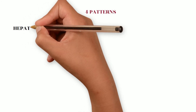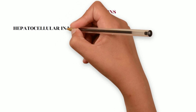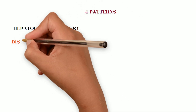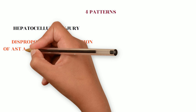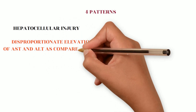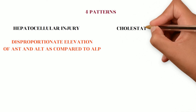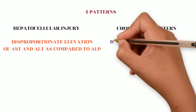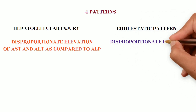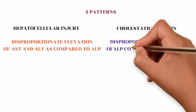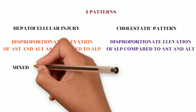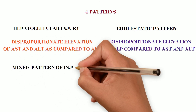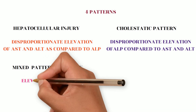Abnormal liver tests can fit into one of four patterns. The first is the hepatocellular pattern, where there is disproportionate elevation of AST and ALT compared to ALP. The second is the cholestatic pattern, where there is disproportionate elevation of ALP compared to AST and ALT. The third is the mixed pattern of injury, where all three — AST, ALT, and ALP — are elevated.